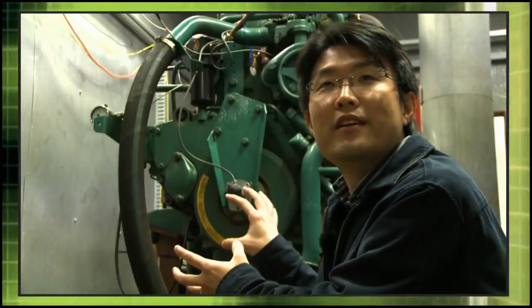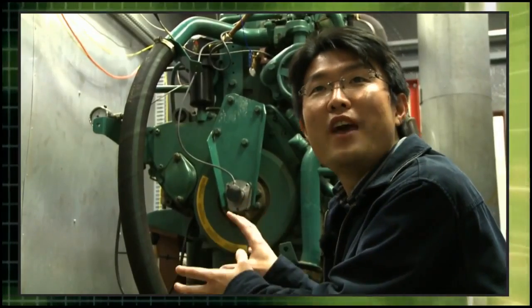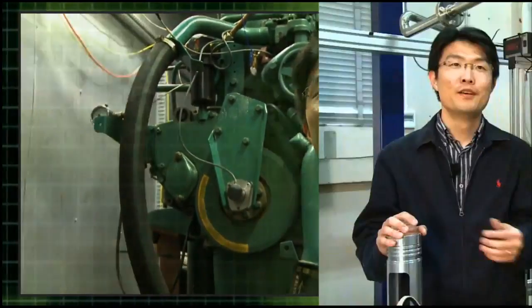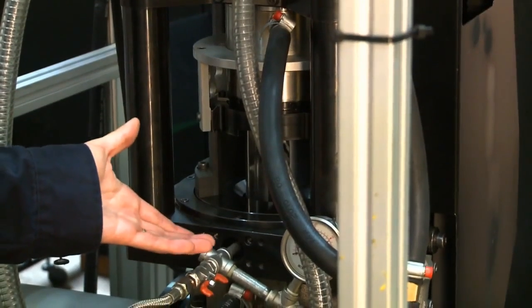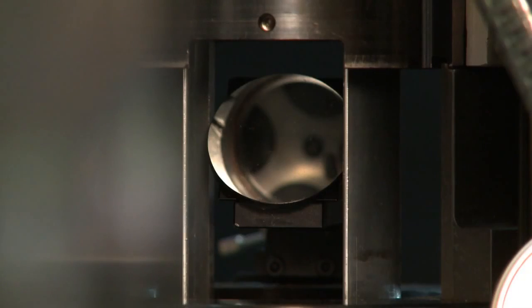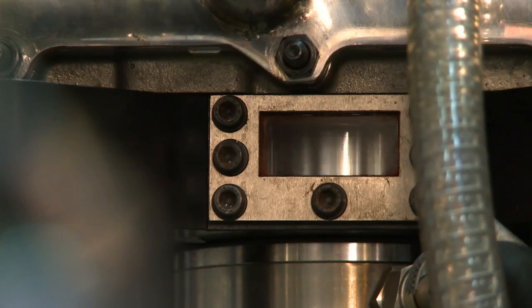What we need here is visual information of the combustion process that's really happening within the cylinder. So here is an optically accessible diesel engine that's built for the first time here in Australia. And this can give us visual information about the emissions formation and also efficiency that's really happening within the combustion chamber.